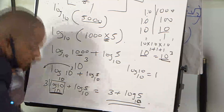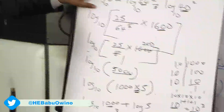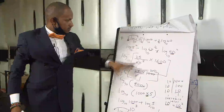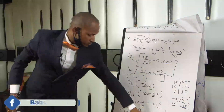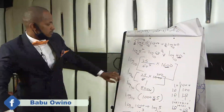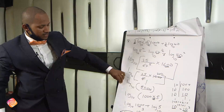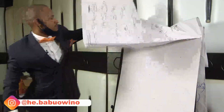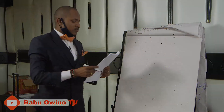That is the simplified form. So you see how long it was, and we can just get it as this value: 3 plus log 5 to base 10. We have finished with the logarithms.